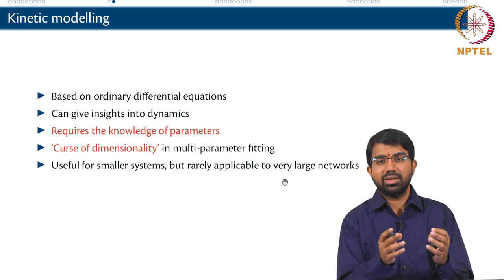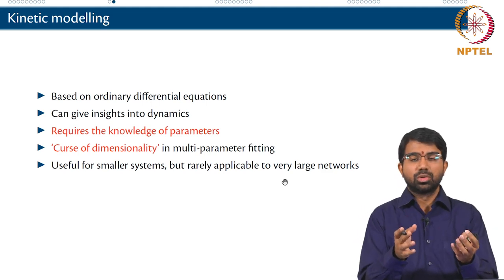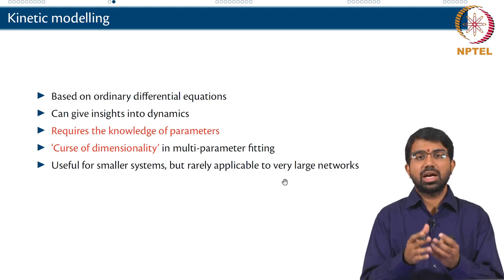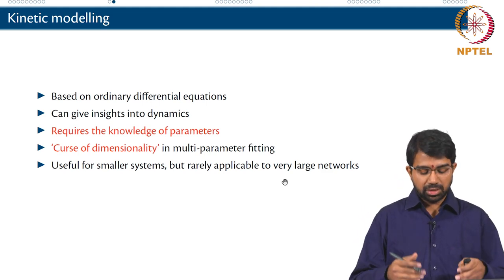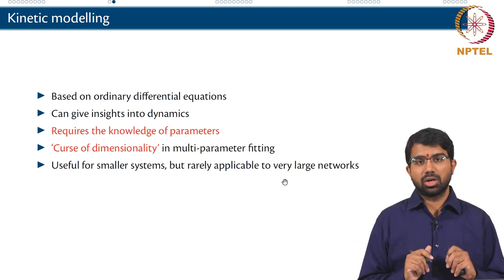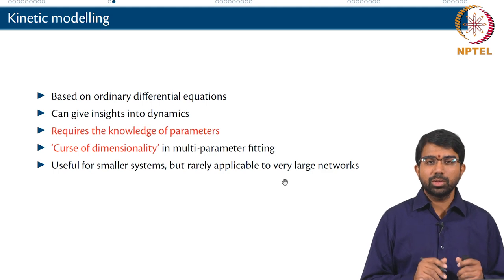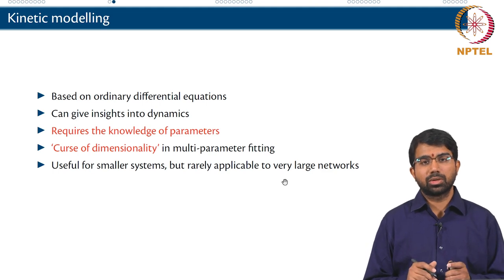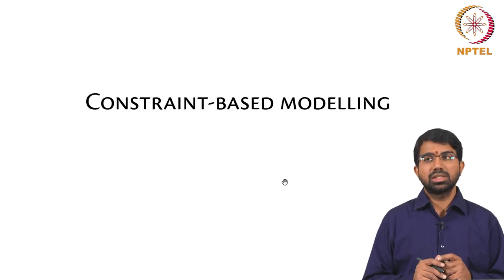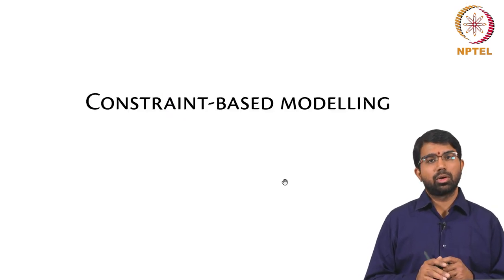If you want to take E. coli, which has around 2000 reactions, and make predictions, kinetic modelling is not going to work. So instead we go for something known as constraint-based modelling.